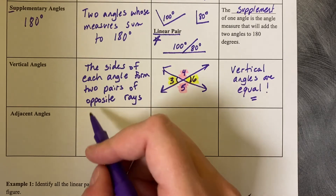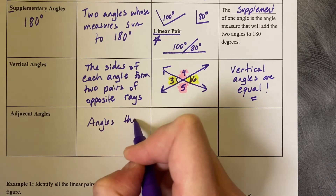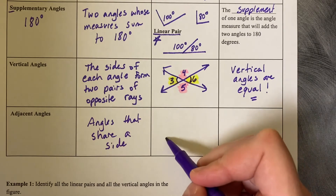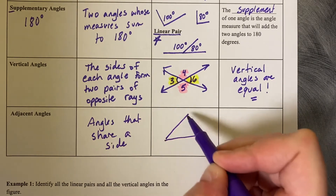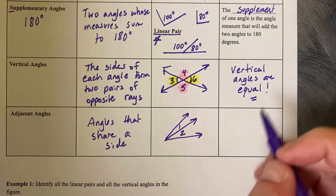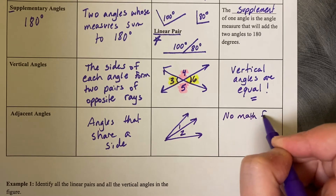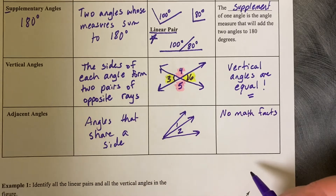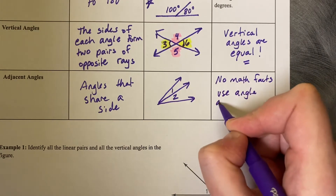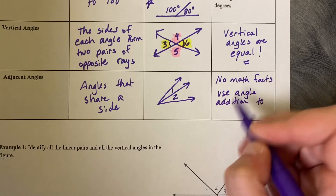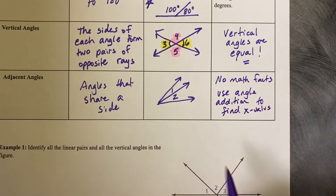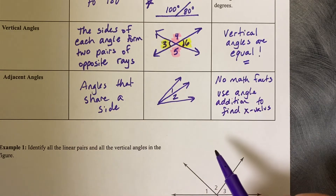Adjacent angles are angles that share a side. It looks something like this: you can have one angle and then an angle going through it — angle one and two. There's no math fact that's always true about their size, but you use angle addition to find the x values. You can add two angles together to find whole angles.